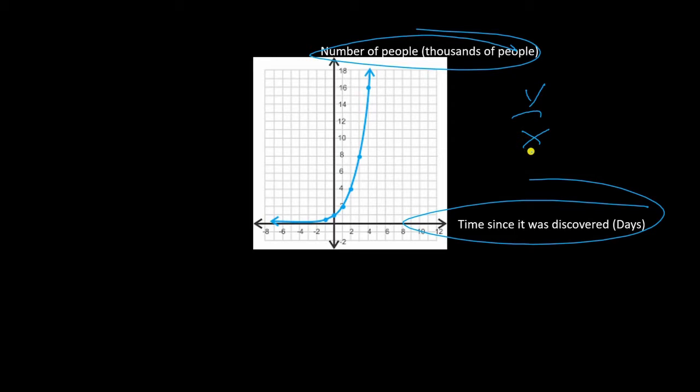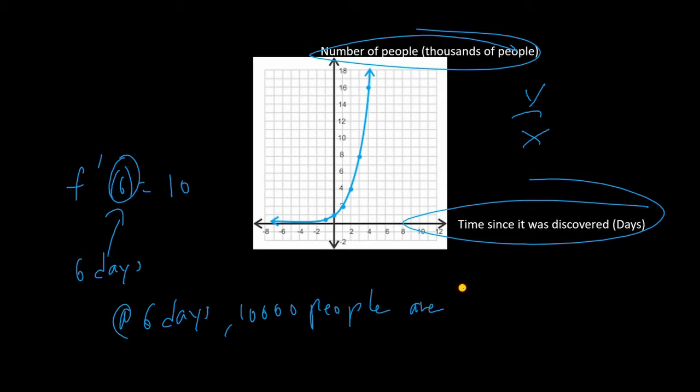Another type of problem you might see is where you are asked to interpret the meaning of a derivative. If I said that in the above graph, the derivative at x equals 6 is 10, what does that mean? First of all, the x equals 6 part means that the point of interest is at 6 days. Also we know that the derivative of this graph has units of thousands of people per day. So since the derivative is 10, the rate of change is 10,000 people per day. At 6 days, 10,000 people are being infected per day.